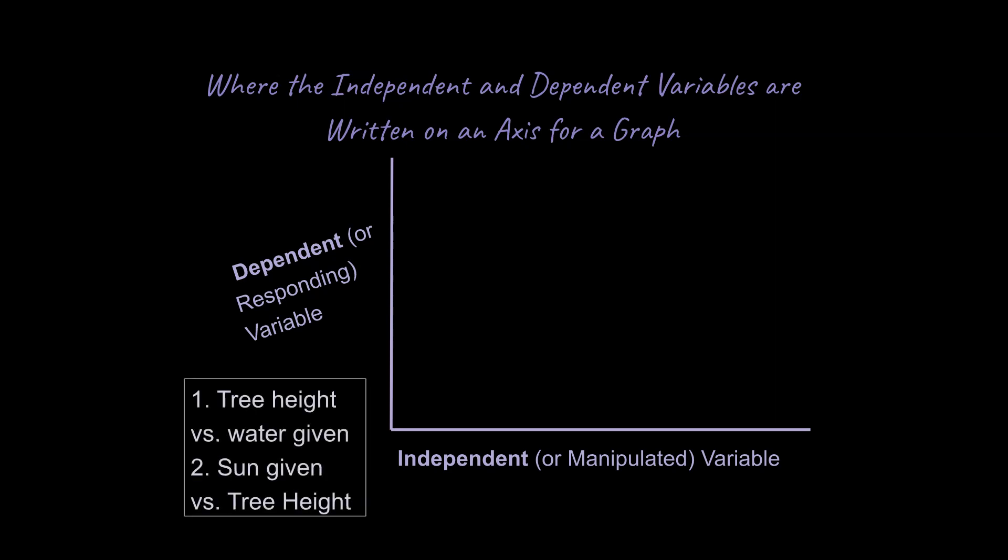Okay, and so just to recap some of the things we talked about here. So, if we were going to put tree height and water given as a dependent or independent variable, I want you to think about which would go where. The height of the tree or the amount of water given to the plant. Which is going to be which, and where are these things going to go. So, take a moment to think about tree height. Should that be on the y-axis or on the x-axis? Water given, should that be on the y-axis or the x-axis?